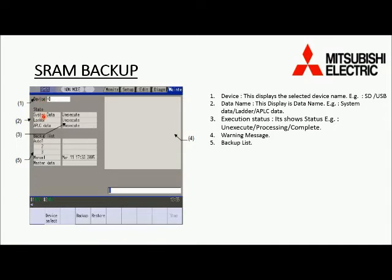The second field is data name, which displays the data name — for example, system data, ladder, and APLC data. The third field is execution status, which shows the current status — for example, unexecuted, processing, or complete. The fourth field is warning message, and the fifth is the backup list.